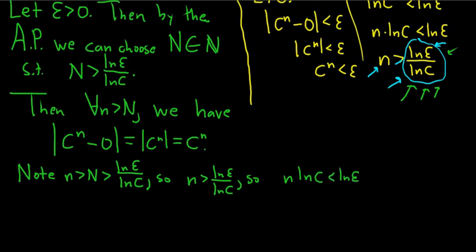Just working backwards from our scratch. Hence, we have the natural log of c to the n less than the natural log of epsilon, right? And then exponentiating both sides, right? Putting an e here, putting an e here, we get c to the n less than epsilon.